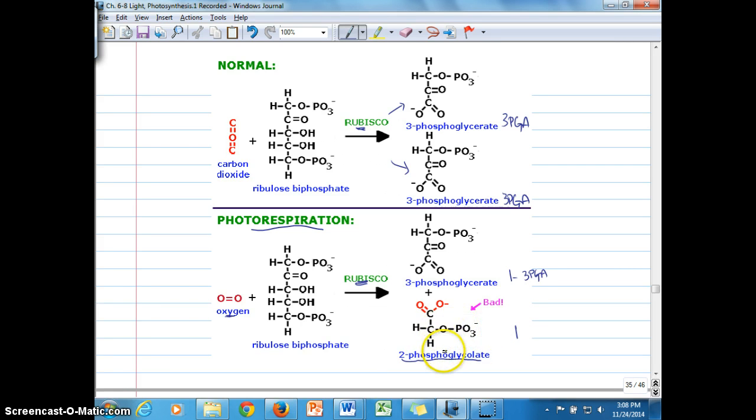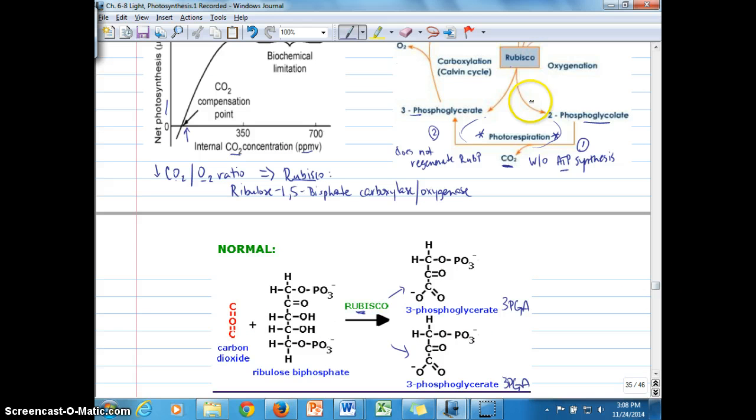And so this is the molecule that goes through that additional cycle that we saw up here to get rid of 2-phosphoglycolate since it's a toxic form.